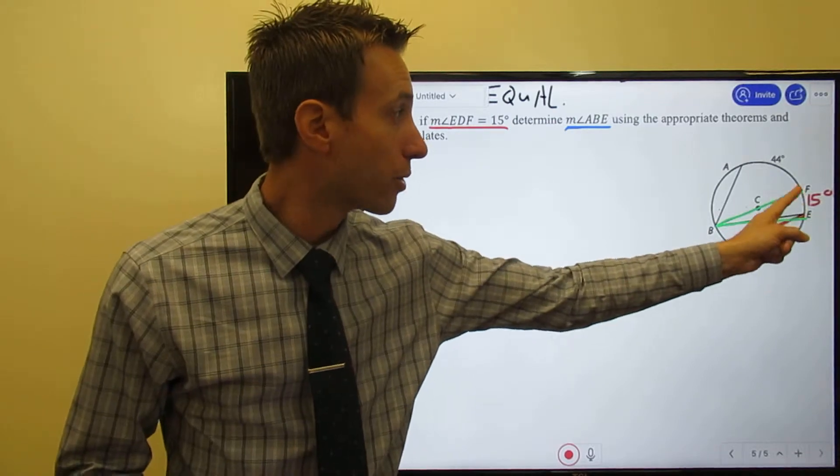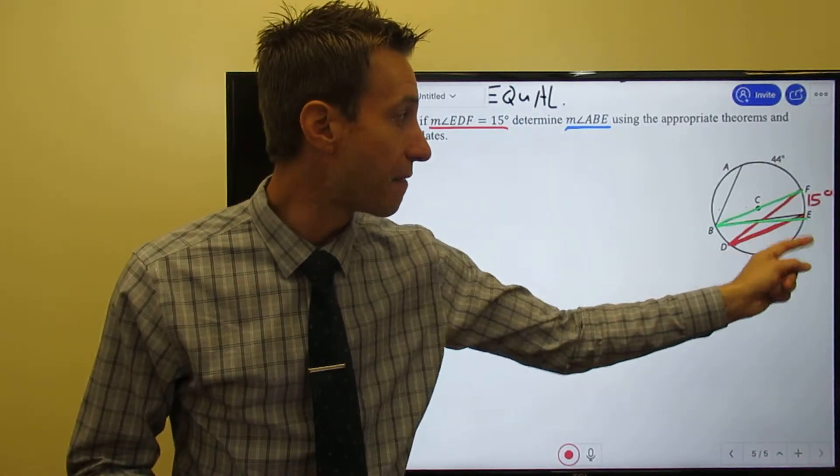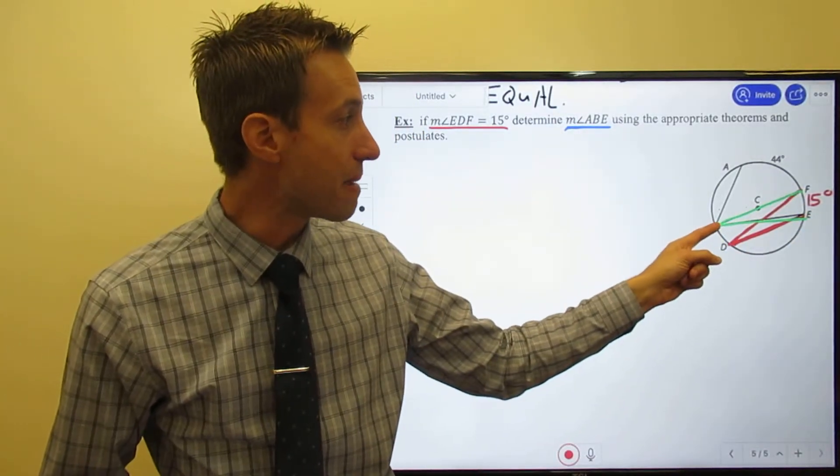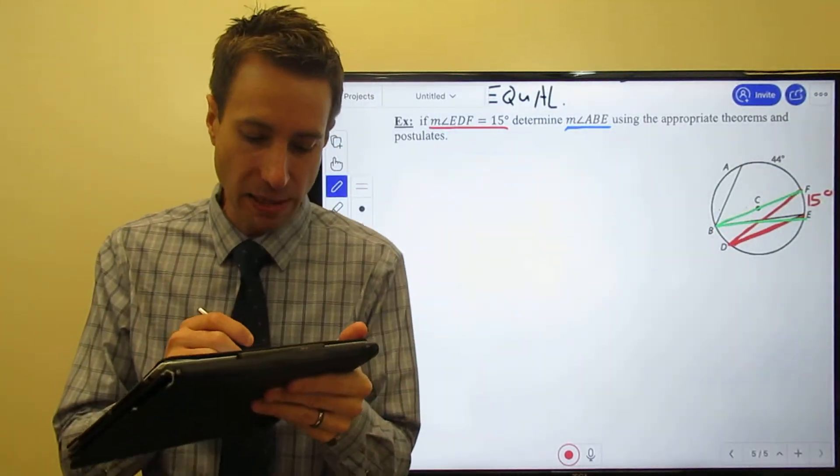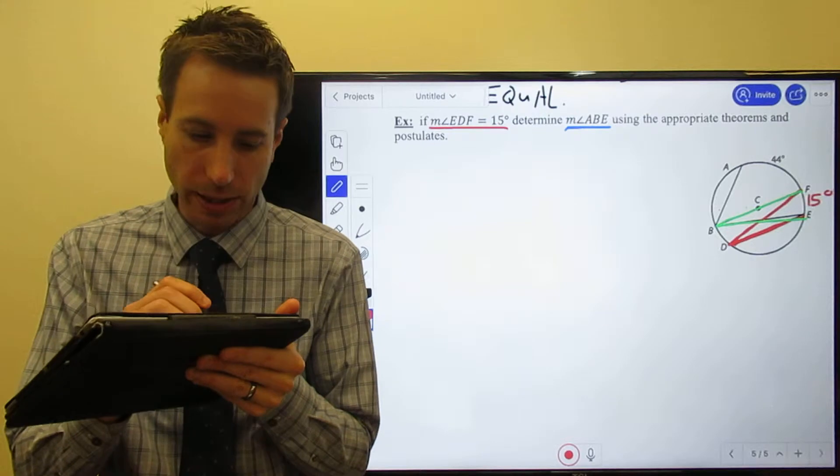Look, both sweep out arc FE. So what does that mean the measure of FBE is? It also has to be 15 degrees. Look, here's the way it works.